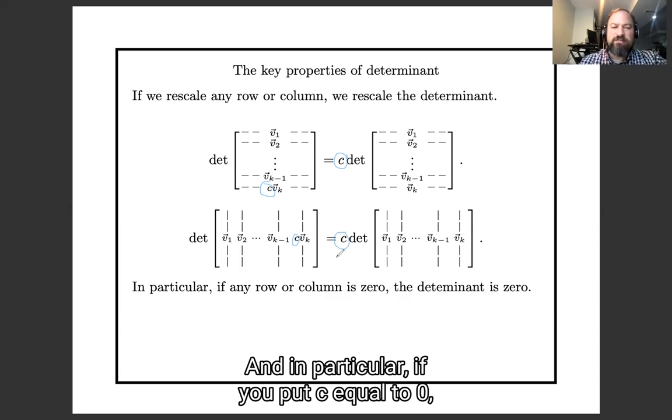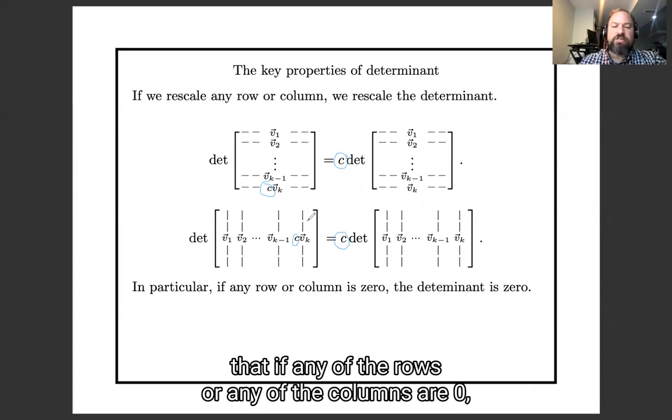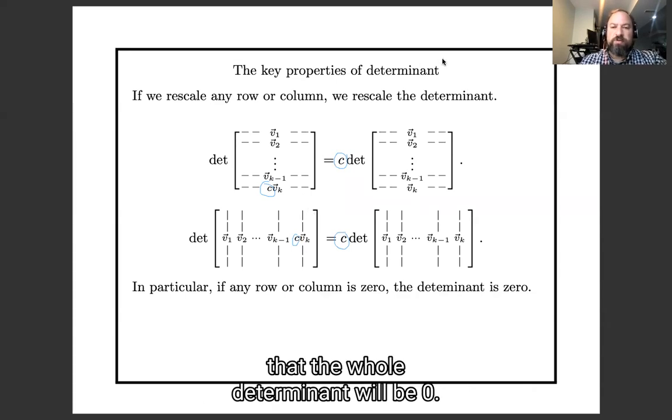And in particular, if you put c equal to zero, you'll see that if any of the rows or any of the columns are zero, then the whole determinant will be zero.